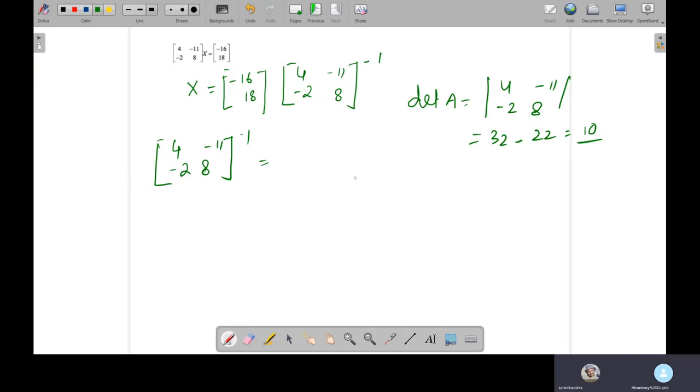Now I have to find adjoint of A. Adjoint of A means this matrix. So as usual, what you have to do, you have to check this one, this one, so 8. This one is negative 2, this will be positive 2, because plus then minus. And third one will be minus, that means negative 11. And this one will be minus plus, that means 4.